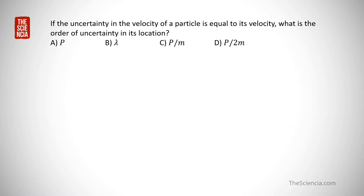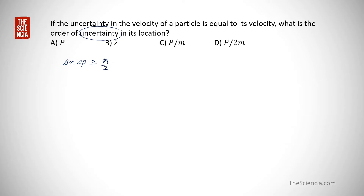The question is: if the uncertainty in the velocity of a particle is equal to its velocity, what is the order of uncertainty in its location? This is related to the uncertainty principle. The uncertainty relation is: delta x times delta p is greater than or equal to h-cross divided by 2.